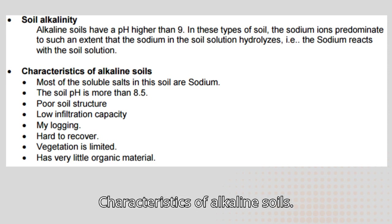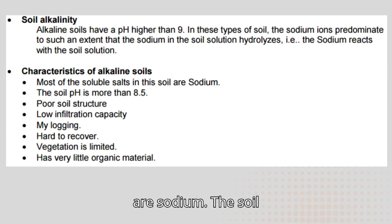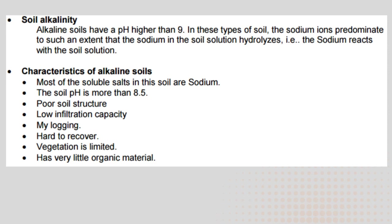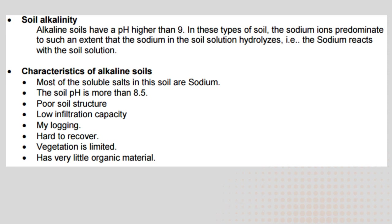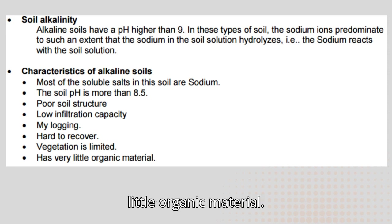Characteristics of alkaline soils: most of the soluble salts in this soil are sodium. The soil pH is more than 8.5. Poor soil structure, low infiltration capacity, hard to recover, vegetation is limited, and the soil has very little organic material.